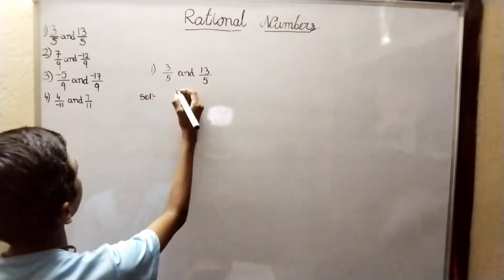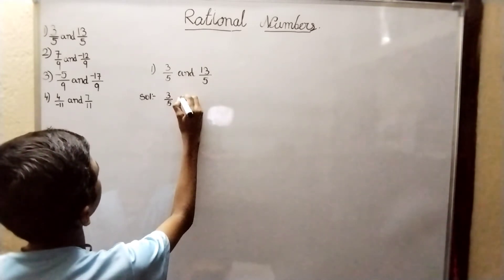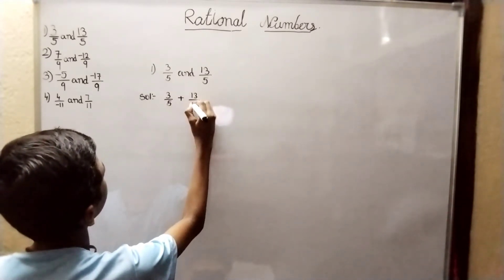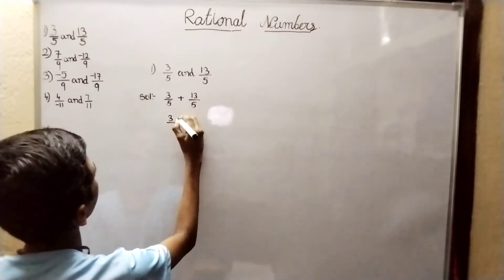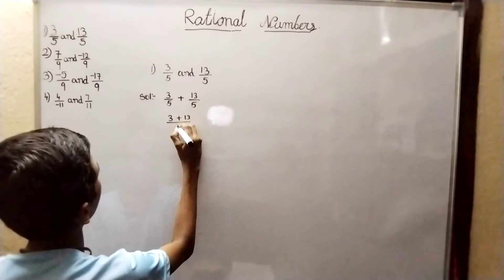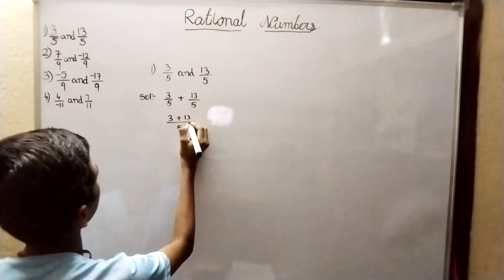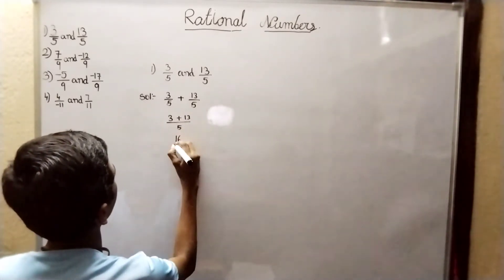Solution: 3 by 5 plus 13 by 5 equals 3 plus 13 by 5, which is 16 by 5.